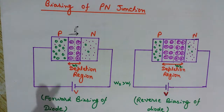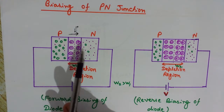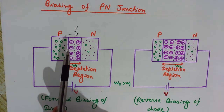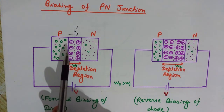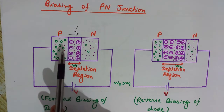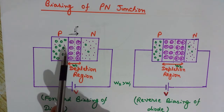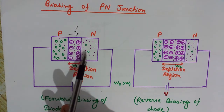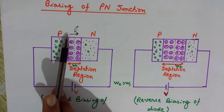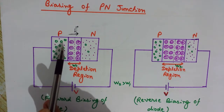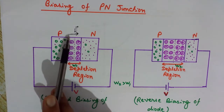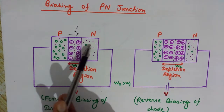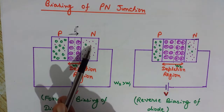The electric force F equals q times E, where q is the charge of the charge carrier and E is the electric field. The electric force is in the direction of the electric field on the positive charge, and in the opposite direction on the negative charge. Since the field is directed from P to N, the holes present in majority on the P side will experience a force towards the N terminal, and electrons will feel a force in the opposite direction towards the P side.